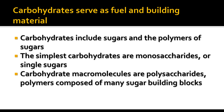The simplest carbohydrates are called monosaccharides. Mono means one, saccharide means sugar, so these are single sugars. Things like glucose, fructose, deoxyribose, ribose, and so forth are monosaccharides.